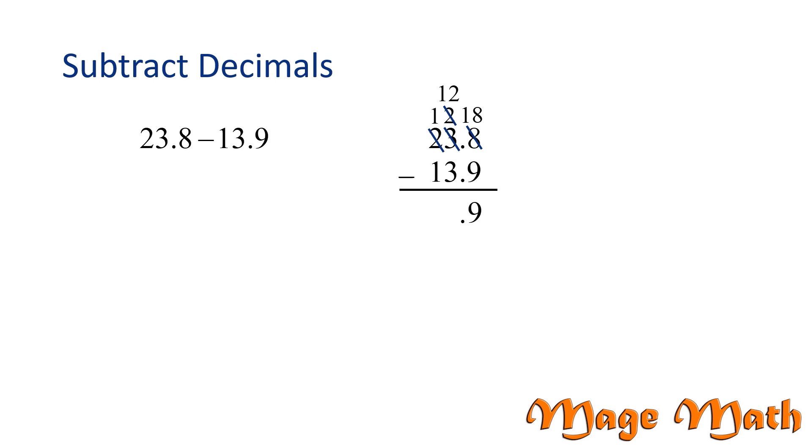This lets us subtract 12 minus 3, which is 9. Now we will subtract 1 minus 1, which is 0. But we don't need to write 0 in front. So we found the difference of 23.8 minus 13.9 is 9.9.